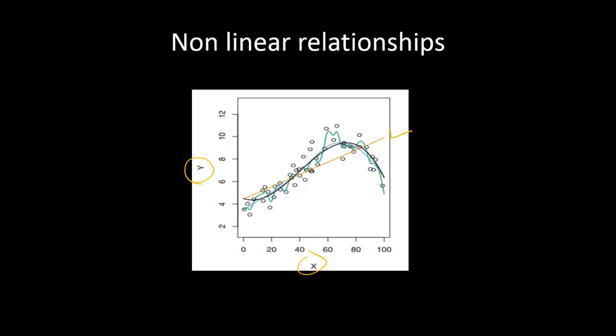That is how people normally choose which model to use. For prediction purposes, it is always good to go with more complicated non-linear or non-parametric models, whereas for simple inferences it is better to go with linear models like simple linear regression or multiple linear regression.